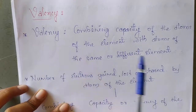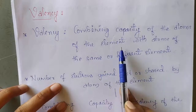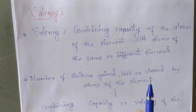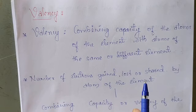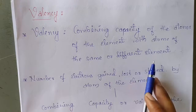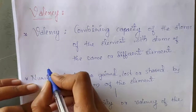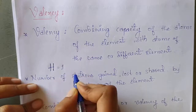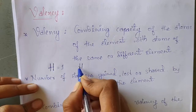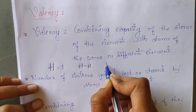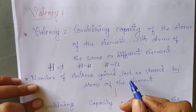Children, valency is the combining capacity of the atom of the element with atoms of the same or different element. So valency is nothing but it is the combining capacity of the atoms of the element with the atoms of the same element or different element. For example, hydrogen — valency of hydrogen is 1 because hydrogen can combine with only one atom of the same element or one atom of the other element.